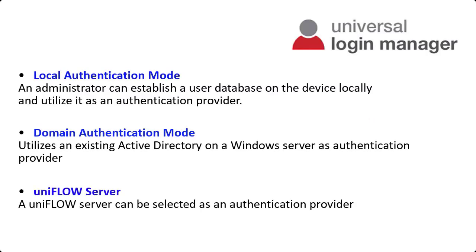There are three authentication modes with ULM: Local Authentication Mode, Domain Authentication Mode, and Uniflow Server. In Local Authentication Mode, an administrator can establish a user database on the device locally and utilize it as an authentication provider. Domain Authentication Mode utilizes an existing Active Directory on a Windows server as the authentication provider. With Uniflow Server, a Uniflow server can be selected as the authentication provider.